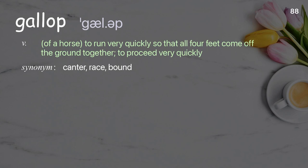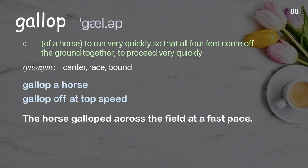Gallop: of a horse, to run very quickly so that all four feet come off the ground together; to proceed very quickly. Examples: gallop a horse; gallop off at top speed. The horse galloped across the field at a fast pace.